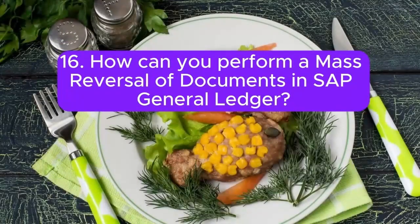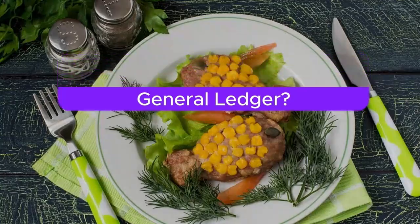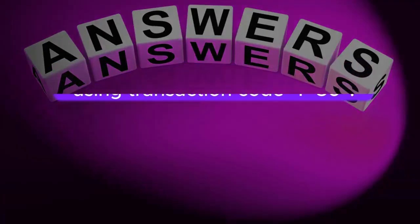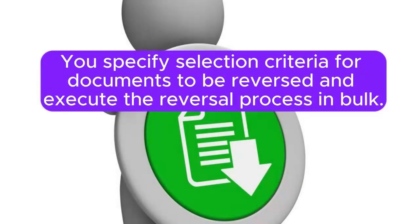Question 16: How can you perform a mass reversal of documents in SAP General Ledger? Answer: Mass reversals are done using transaction code F80. You specify selection criteria for documents to be reversed and execute the reversal process in bulk.